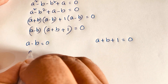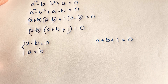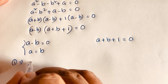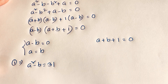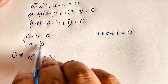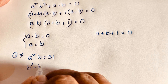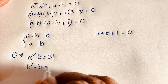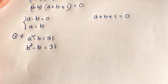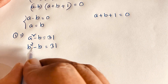From Case 1, A minus V equals 0 means A is equal to V. Recalling our first equation, A squared minus V equals 31. If we substitute A equals V, it becomes V squared minus V equals 31. So we will find the value of V from this quadratic equation.